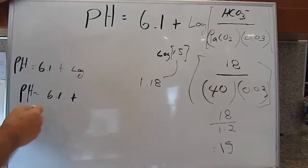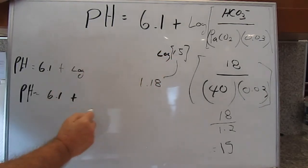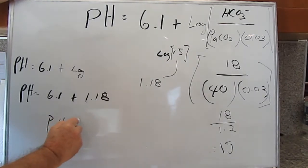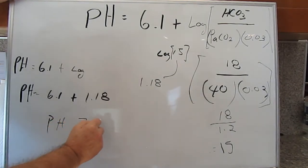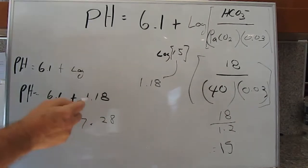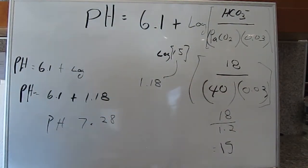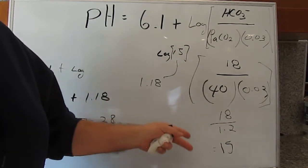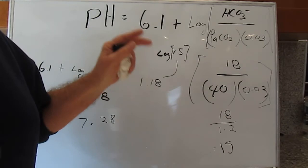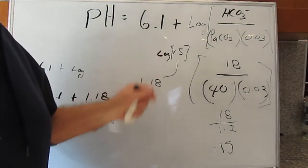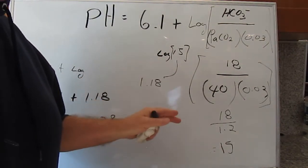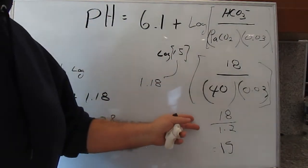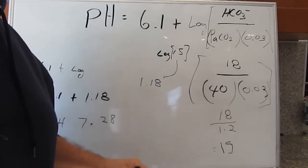So our pH is 6.1 plus the log of 15, which is 1.18. Adding those together, our pH is 7.28 — acidosis. As you can see, 18 divided by 1.2 gives us a ratio of 15 to 1, which is less than our normal ratio of 20 to 1. Any time our ratio is less than 20 to 1 we're going to be acidotic, and any time our ratio is more than 20 to 1 we're going to be alkalotic.